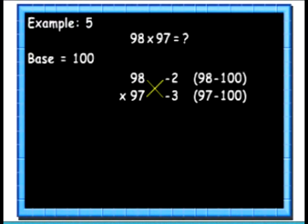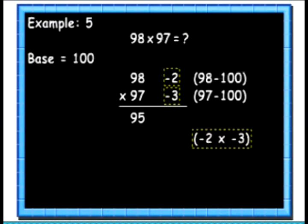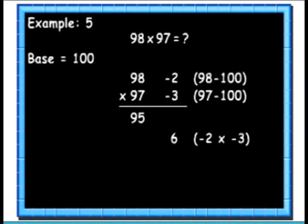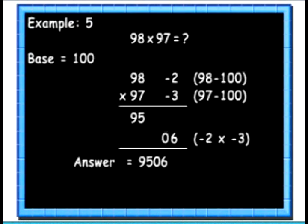Then we will multiply both the differences: minus 2 multiplied by minus 3 gives 6. We will write this 6 below. The number of digits in the product of differences should be equal to the number of zeros in the base. Since the base is 100, we will write 06. Now we will join both the numbers below. So we get the result as 9506.